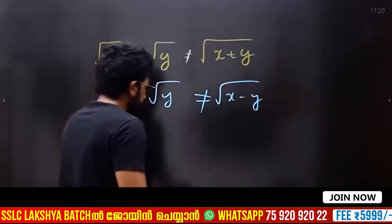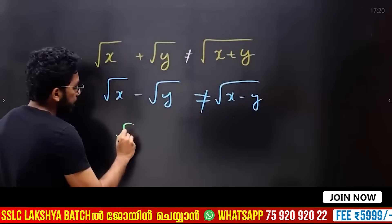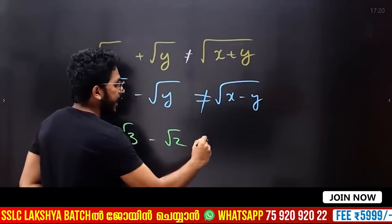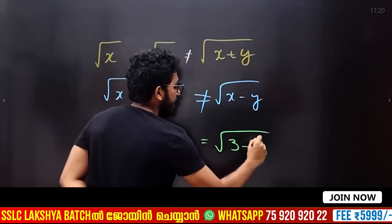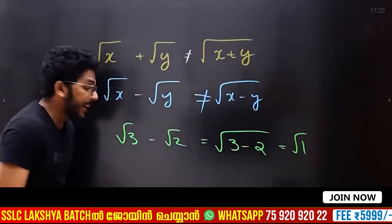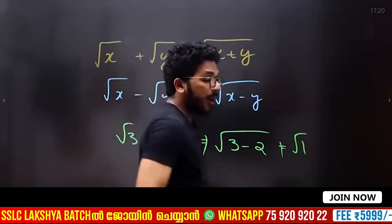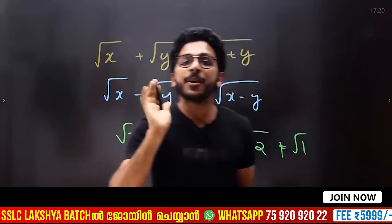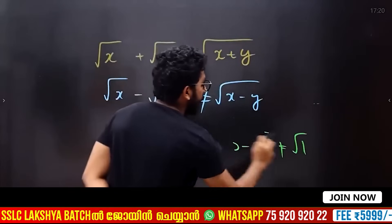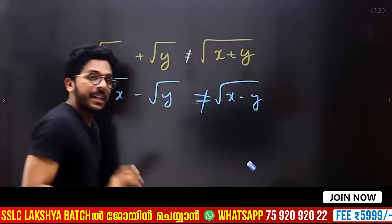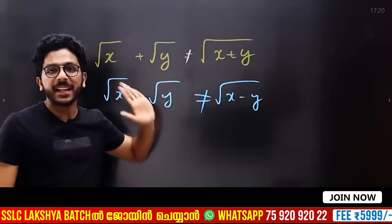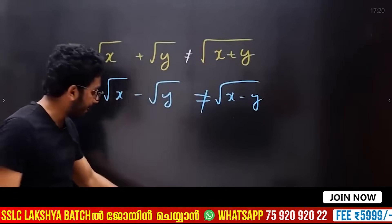For example, if you want to add root 3 minus root 2, it's not true. If you want to add something, we want to simplify it, we want to add something like this. This is wrong! We don't know what you want to do. If you want to add two roots like this, you can add something like this.